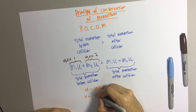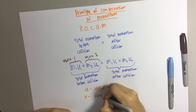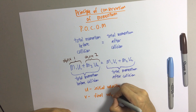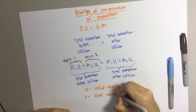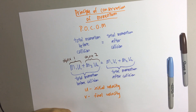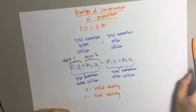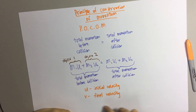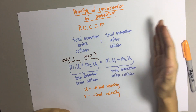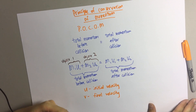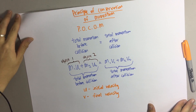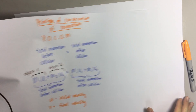V means the final velocity of the objects. We must remember this formula very clearly before we can apply it in questions. Let me show you an example.